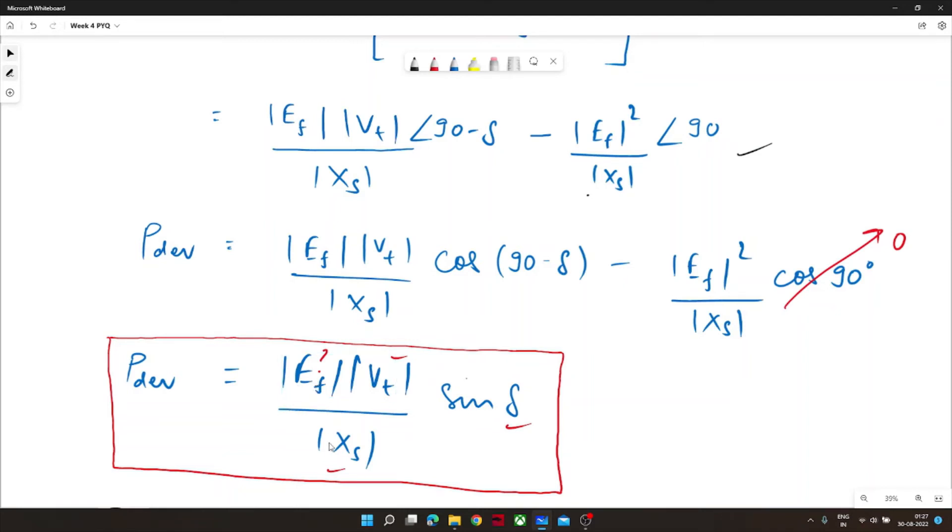That is E_f V_t by X_s sin delta. We know V_t, we know X_s, sin delta since delta was given we can easily calculate sin delta.